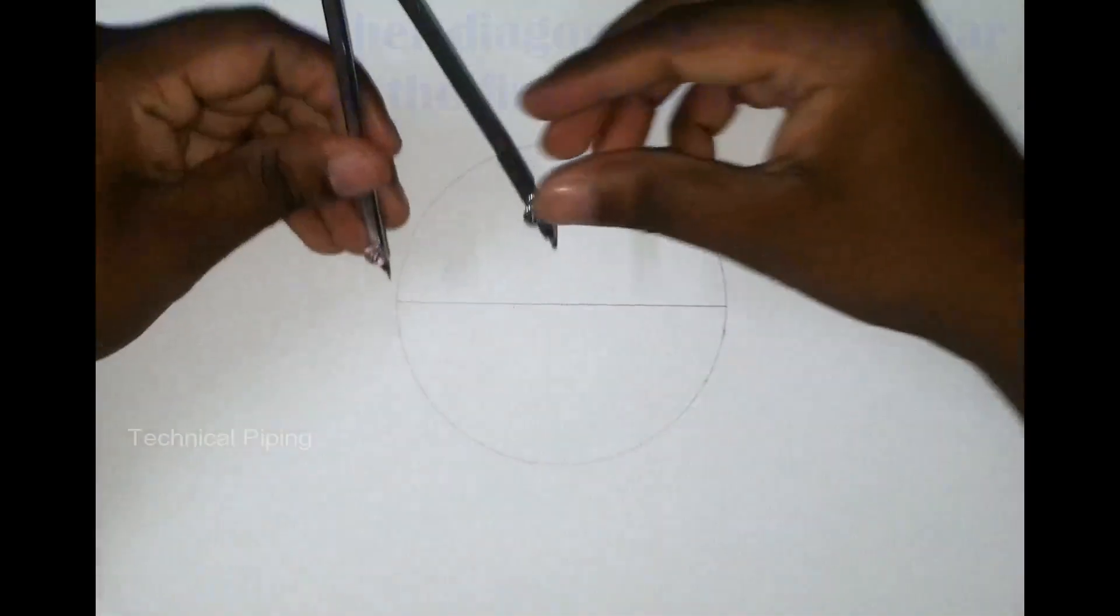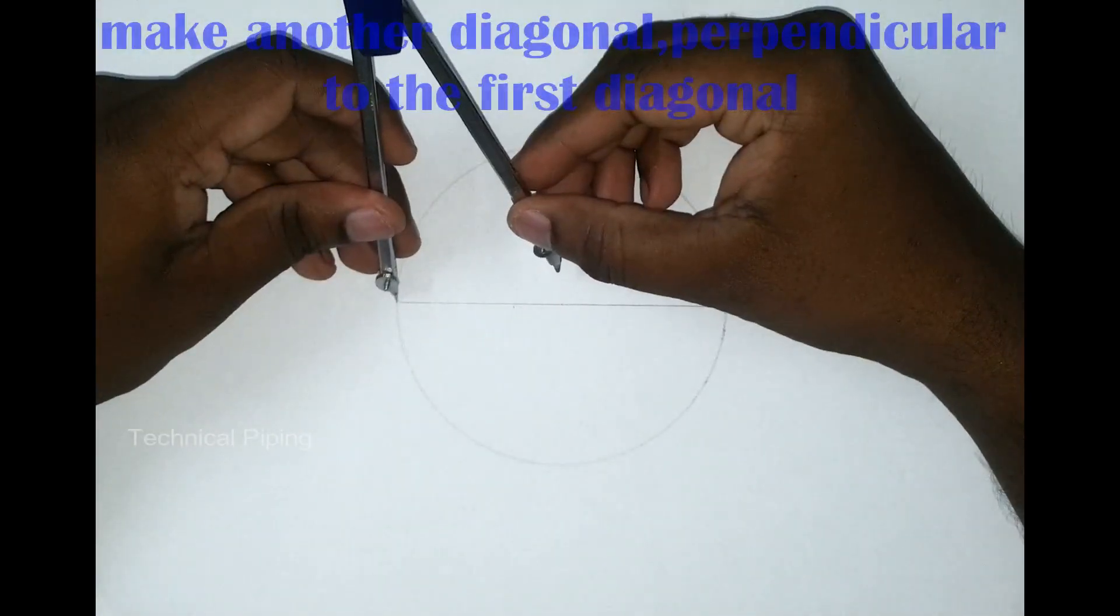Now make another diagonal perpendicular to the first diagonal.